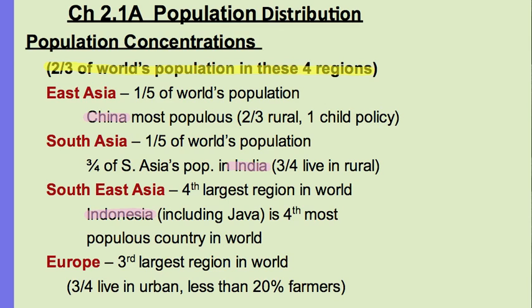Population clusters: there are four regions that most of the world lives in currently. That is East Asia, which is largely China — including Japan, the Koreas, and Mongolia. South Asia, which is largely India — also Nepal, Bangladesh, and Bhutan, but India has three-fourths of South Asia's population. Southeast Asia, with Indonesia — the island of Java being the largest. And then Europe. The difference between those in the Asian region and Europe is rural versus urban.